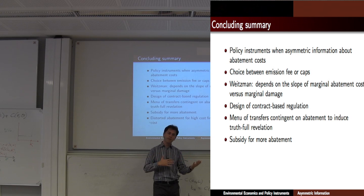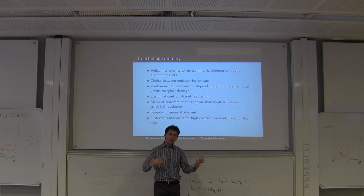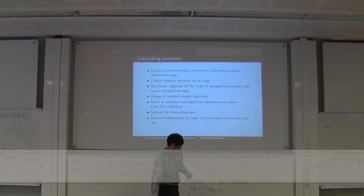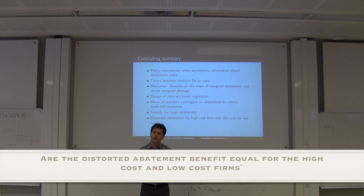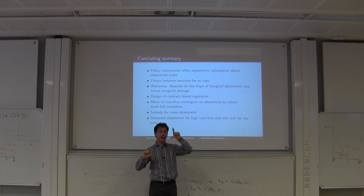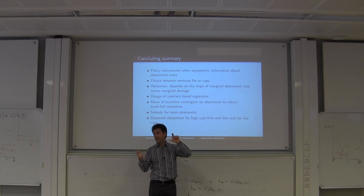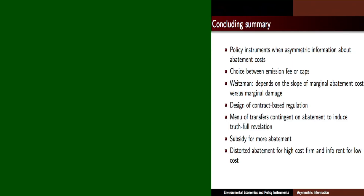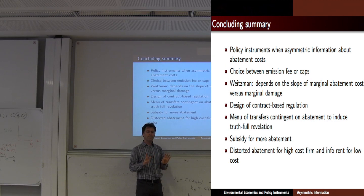The trade-off is efficiency versus subsidy minimization. To minimize the subsidy, you distort abatement or emissions. If you had first-best abatement for the high-cost firm, the low-cost firm's rent would be higher. So you reduce the rent by distorting abatement for the high-cost firm — while the high-cost firm gets no rent at all. The model here uses emissions and damage, but the same story works with a model of abatement and benefit of abatement.